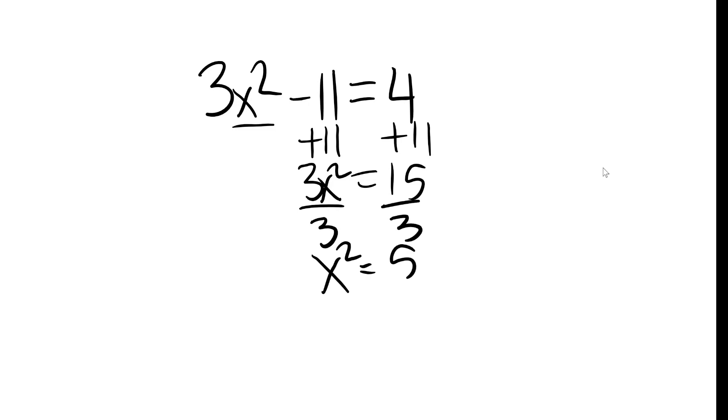our next type of example is the kind where you just have to do a little bit of algebra before you can get to the final answer. So let's say you have something like 3x squared minus 11 equals 4. So first step is you want to get the x squared by itself when you're doing these square root questions. We'd add 11 to both sides. Now we want to get rid of the coefficient of x squared, which is 3. And now we can square root both sides, and boom, x equals root 5, x equals negative root 5.